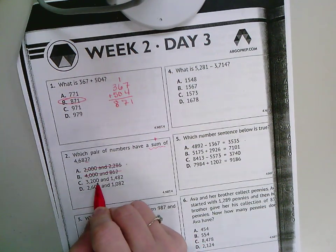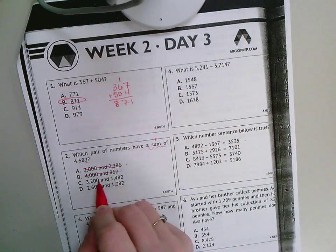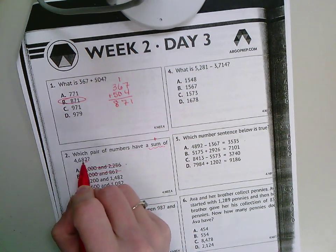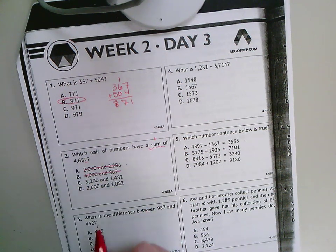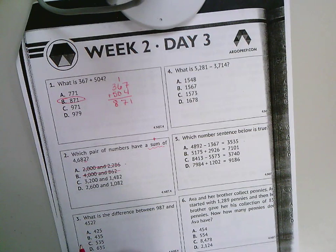3,200 and 1,482: that gives me 2 plus 0 gives me the 2 in the ones place, 8 plus 0 gives me the 8 in the tens place, 4 plus 2 gives me a 6 in the hundreds place, and 1 plus 3 gives me a 4 in the thousands place.